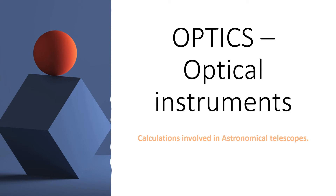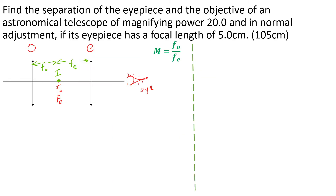Welcome to this next lesson in optics, optical instruments, and calculations involved in the astronomical telescope. The first example asks us to find the separation of the eyepiece and objective of an astronomical telescope of magnifying power 20.0 in normal adjustment, if the eyepiece has a focal length of 5 centimeters.